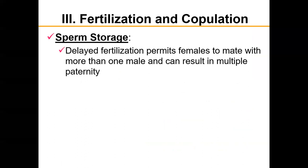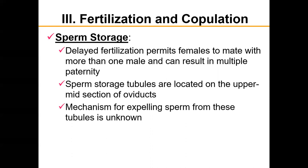Reptiles also have sperm storage. Unlike the spermathecae found on the roof of the cloaca in amphibians, sperm storage tubules in reptiles are located on the upper midsection of the oviducts. Delayed fertilization permits females to mate with more than one male, which can result in multiple paternity — offspring that are half-siblings sharing a mother but having different fathers. The mechanism for expelling sperm from these tubules is currently unknown.